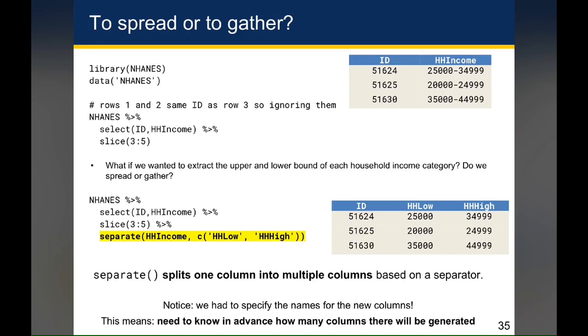So note that separate splits one column into multiple columns based on a separator. And the default is for a separator, the separate function to use anything that's not a number or a letter as kind of a separator. And that's why even with the default settings, it was able to recognize that we wanted to split on the dash or the minus sign between the two numbers.